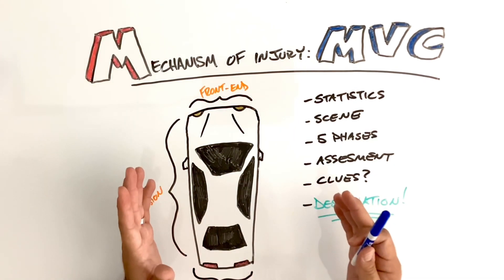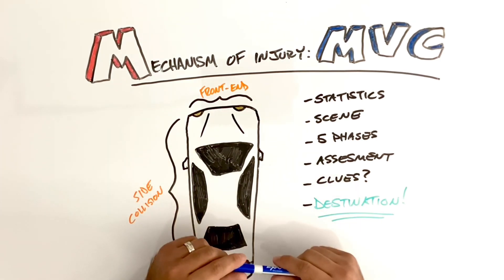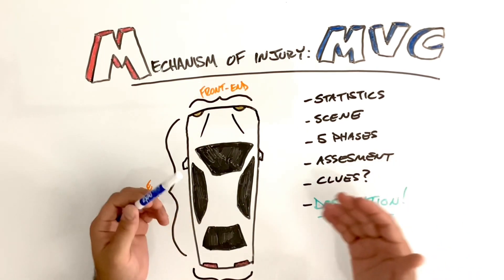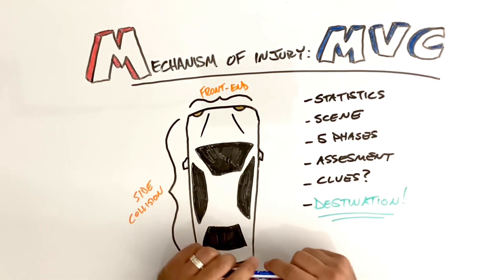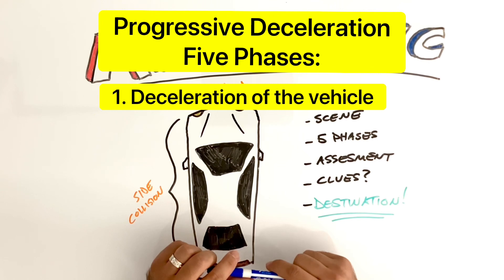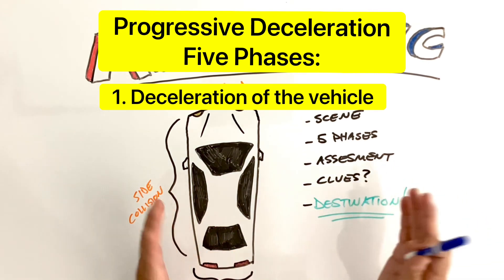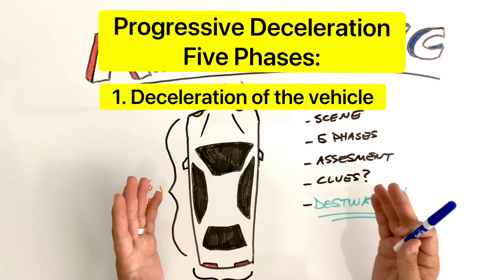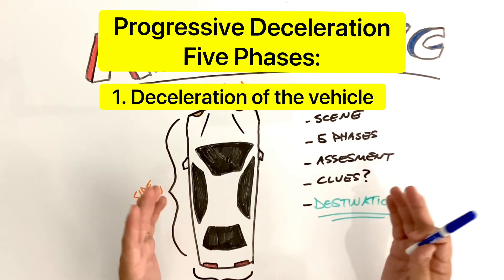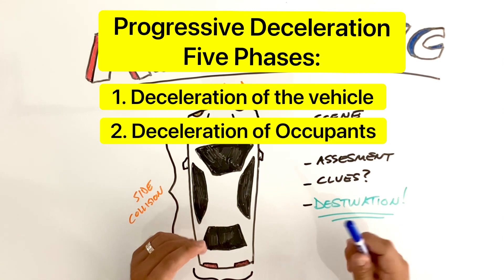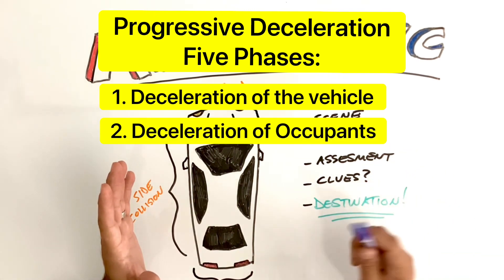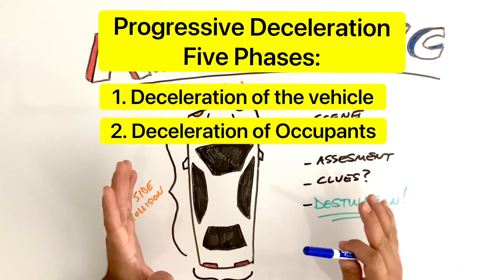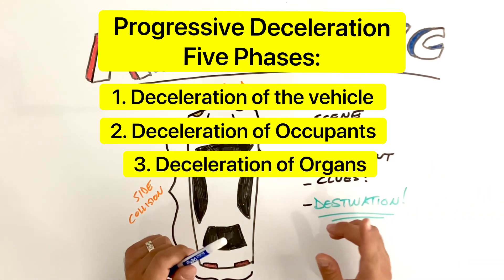When you're looking at the five phases of deceleration, let's say we have a vehicle into a tree. First is the deceleration of the vehicle — that occurs when the vehicle strikes another object and is brought to an abrupt stop. The second phase is the deceleration of the occupants. Now that the car has hit, there's a deceleration of the occupants moving forward.